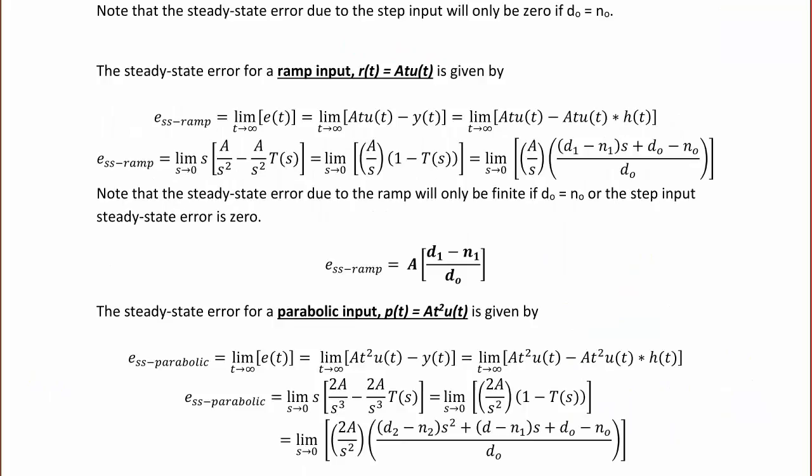Now let's find the steady-state error for a ramp input. If a ramp is defined to be Atu(t), then the steady-state error for the ramp is the limit as t approaches infinity of e(t), which is Atu(t) - y(t), or Atu(t) - Atu(t) convolved with h(t). In the frequency domain, using the final value theorem,